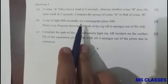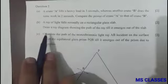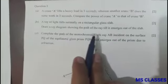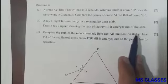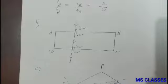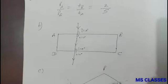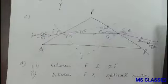Part (b): A ray of light falls normally on a rectangular glass slab. Draw a ray diagram showing the path of ray till it emerges out of the slab. This is the required diagram. Part (c): Complete the path of the monochromatic light ray AB incident on the surface PQ of the equilateral glass prism PQR till it emerges out of the prism due to refraction. This is the required diagram.